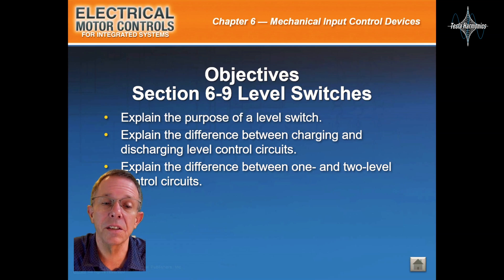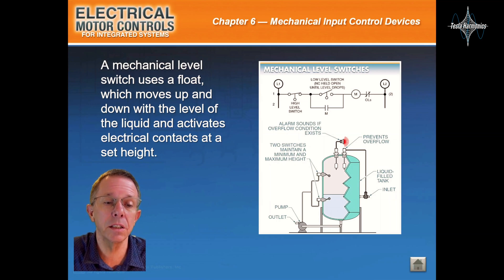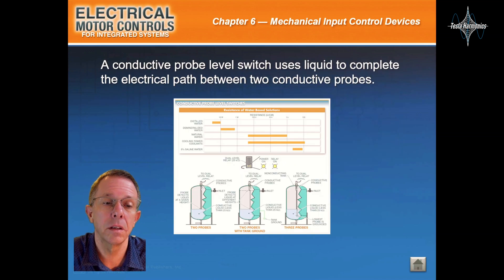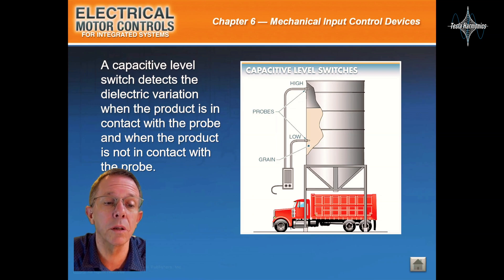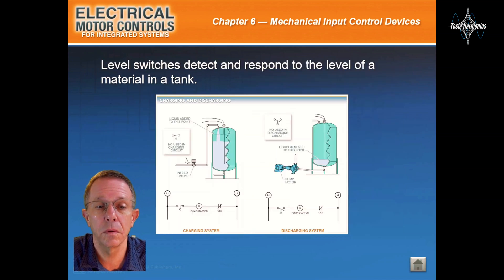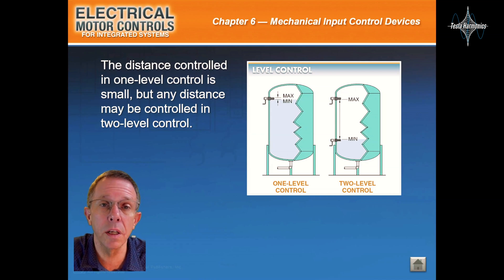Section 6-9: Level Switches. A mechanical level switch uses a float which moves up and down with the level of a liquid and activates electrical contacts at a set height. A conductive probe level switch uses liquid to complete the electrical path between two conductive probes. A capacitive level switch detects the dielectric variation when the product is in contact with the probe and when it is not. Level switches detect and respond to the level of a material in a tank. The distance controlled in one-level control is small, but any distance may be controlled in two-level control.